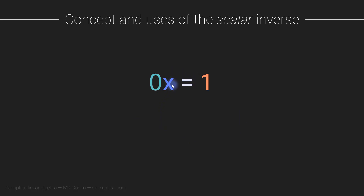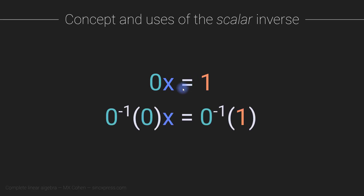Now consider the equation 0·X = 1 — how would you solve for X? Unfortunately, you can't; this equation does not have a solution because there is no number that can multiply 0 to give 1. Another way to see this: if you try the same approach, you get stuck because computing the inverse of 0 means computing 1 over 0, which is not a real number. The conclusion is that not all numbers have an inverse — and you'll see that's also the case for matrices.